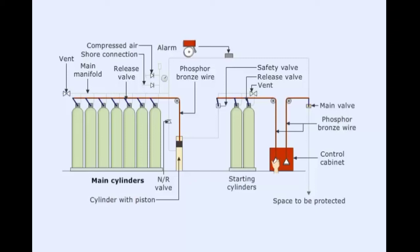Pull the wire connected to the starting cylinders in the control box. The gas released opens the safety valve in the system.